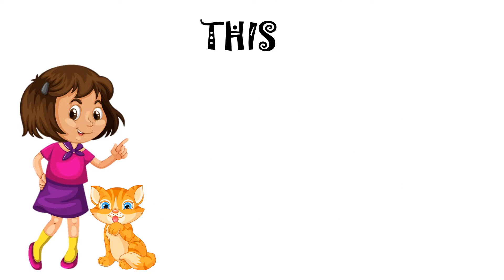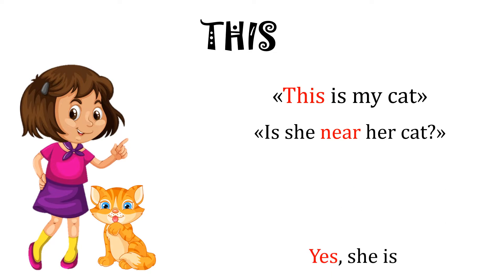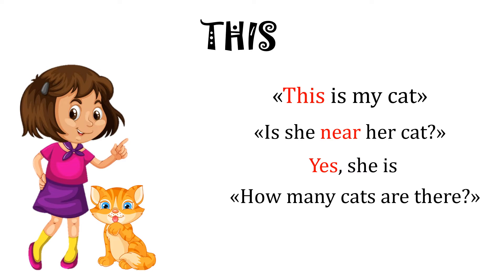What do you think about this? We use 'this' — for example, 'This is my cat.' It's near me and it's only one. Is she near her cat? Yes, she is. She is near, that's why I use 'this.' How many cats are there? Only one. So, I use 'this' if I have only one and it's near. This is my cat.